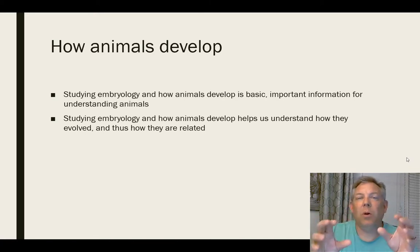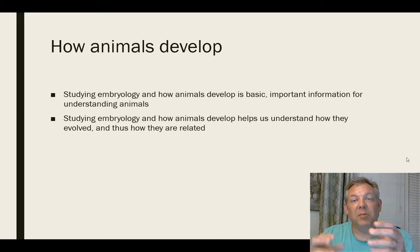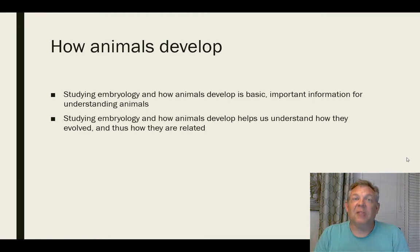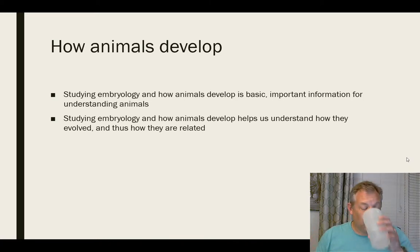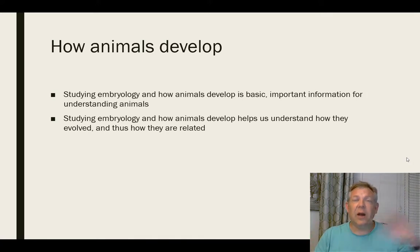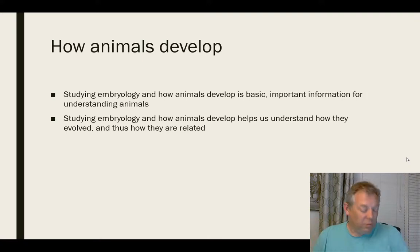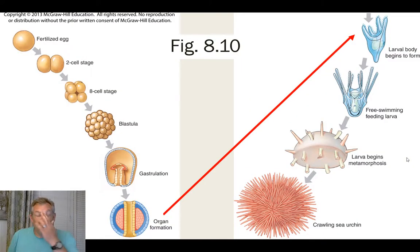You can look at two organisms that as adults look very different, but when you look at their development you see they develop in a similar manner. That suggests they have a recent common ancestor and are more closely related to each other than to other animals. Embryology is a huge topic — you could do an entire semester on it — but we're going to learn enough to understand how we group the different animal phyla. Here's a figure from your book showing different stages of development.